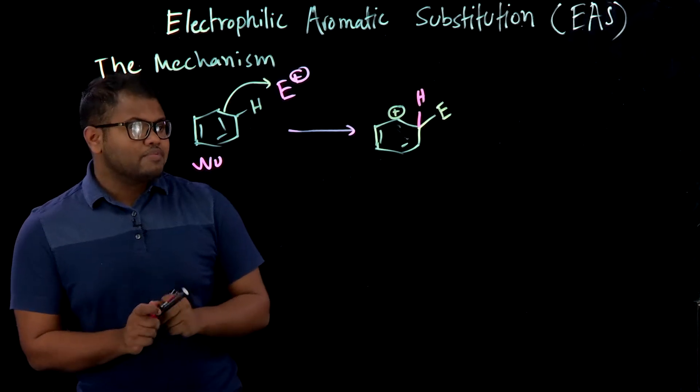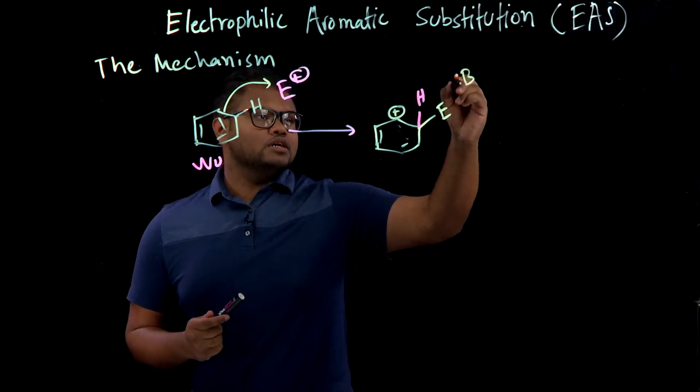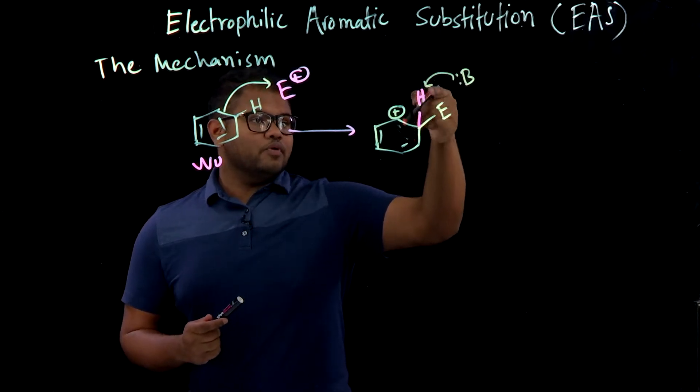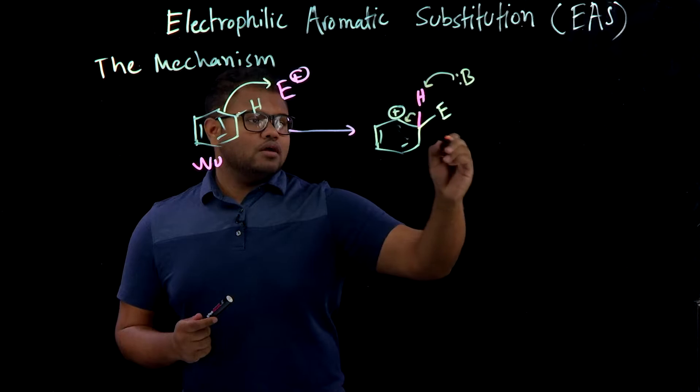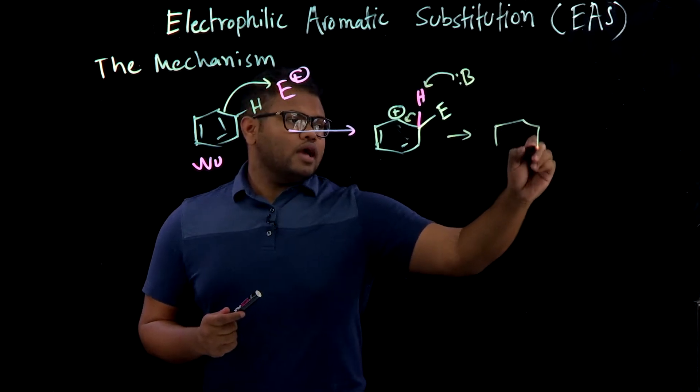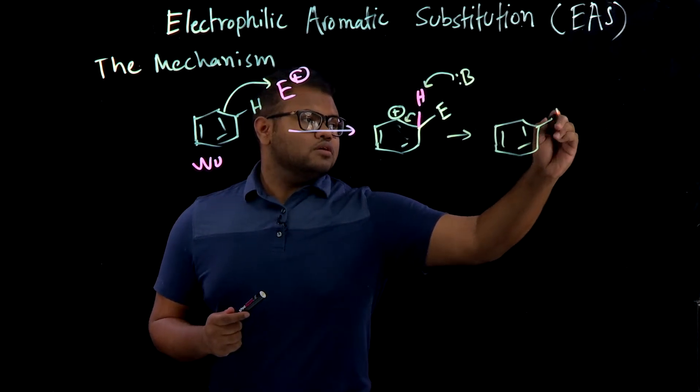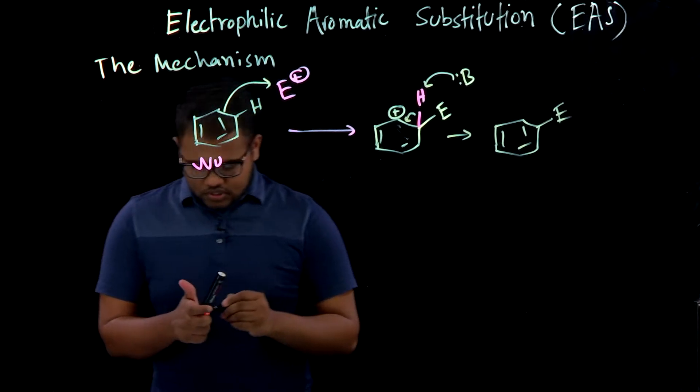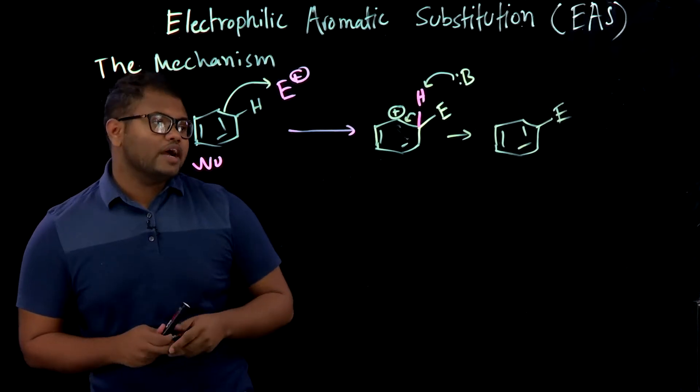And in the second step, what happens is anything in the reaction, any sort of base or acid, deprotonates that and you get back your aromaticity which is highly favorable. So this is the general scheme that these types of reactions are going to follow.